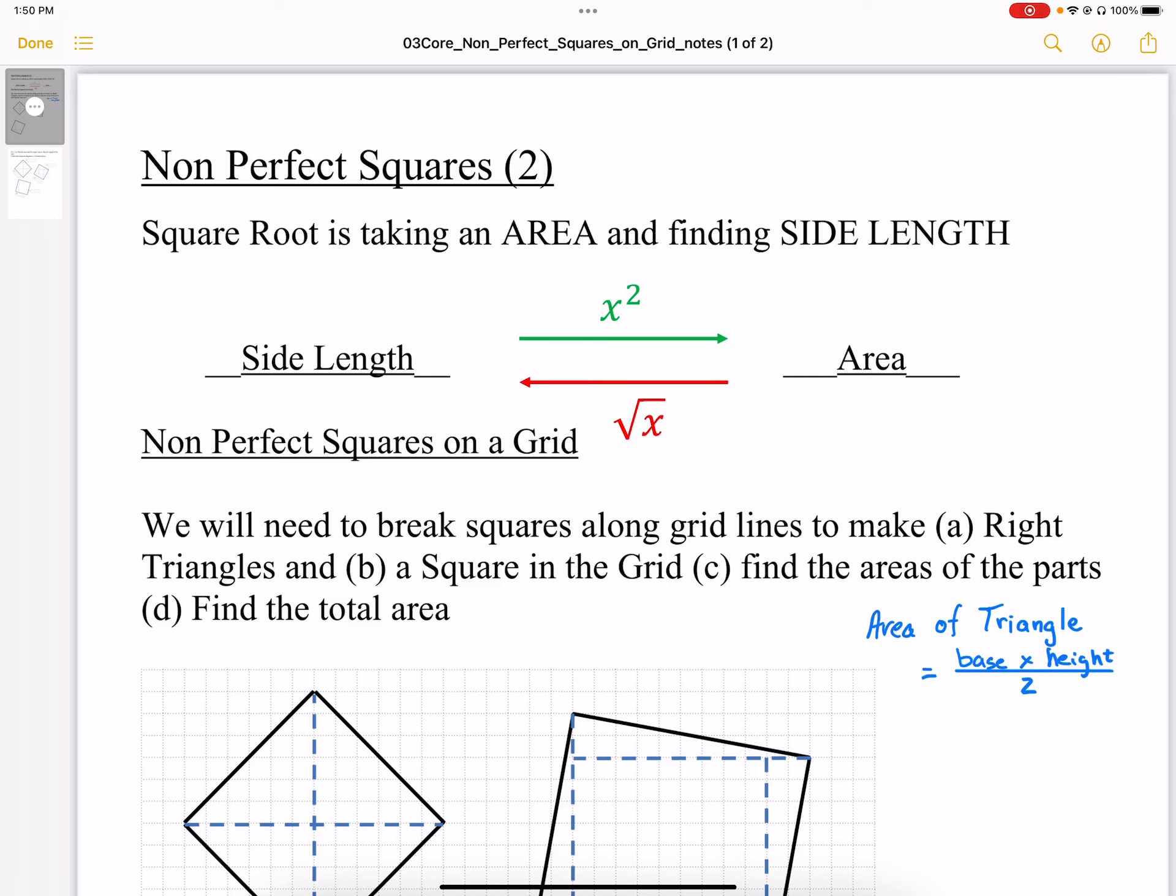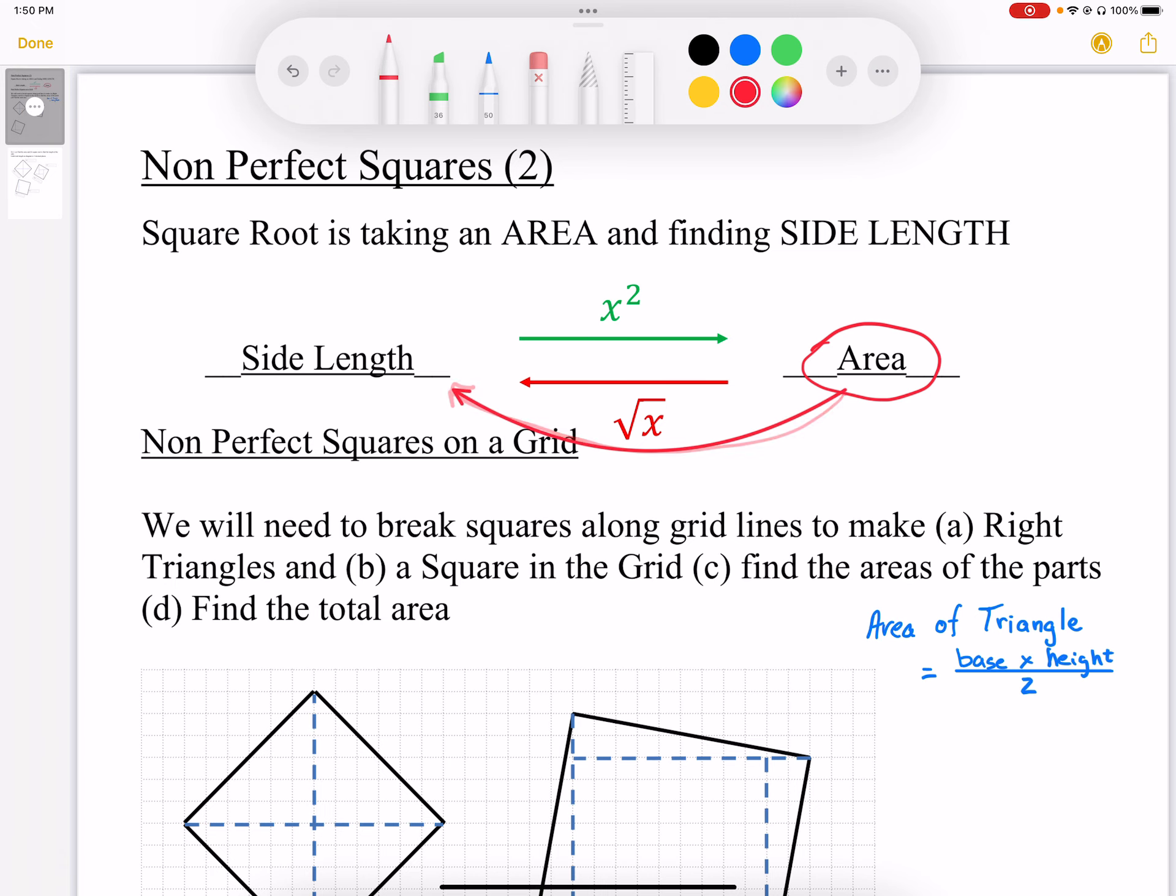It's important to remember the big ideas around squares and square roots. They are opposites of each other. What the square root does is it takes an area. We start with our area, and we are finding side length by square rooting.